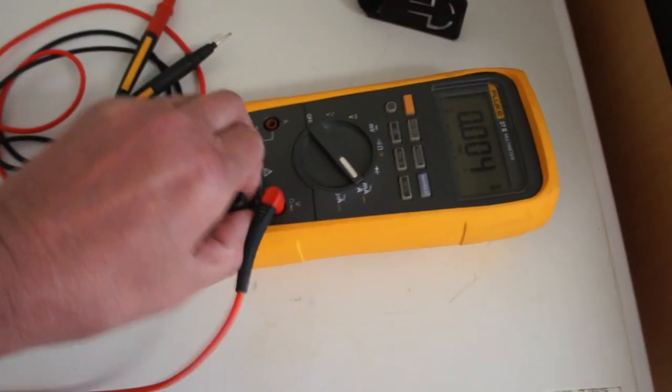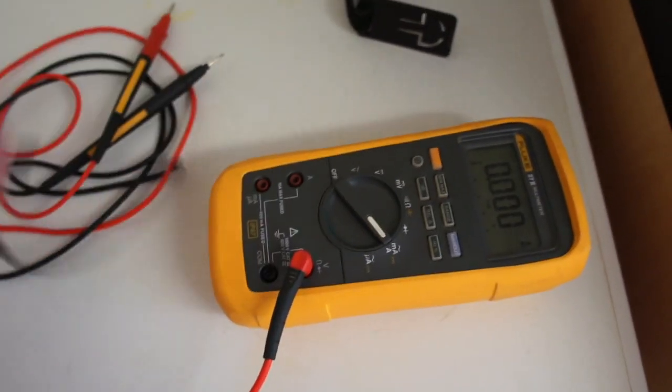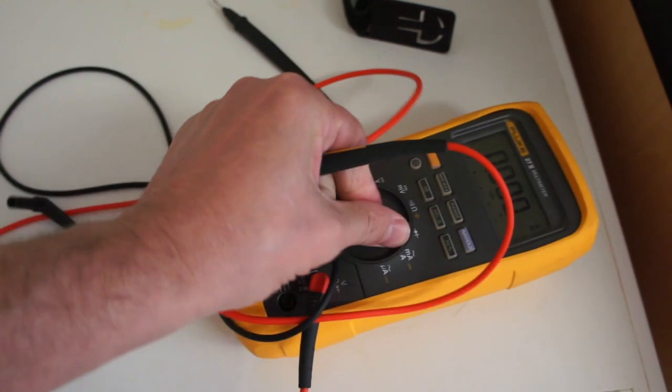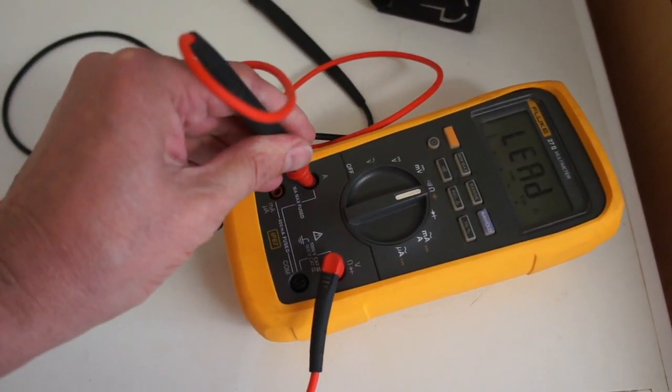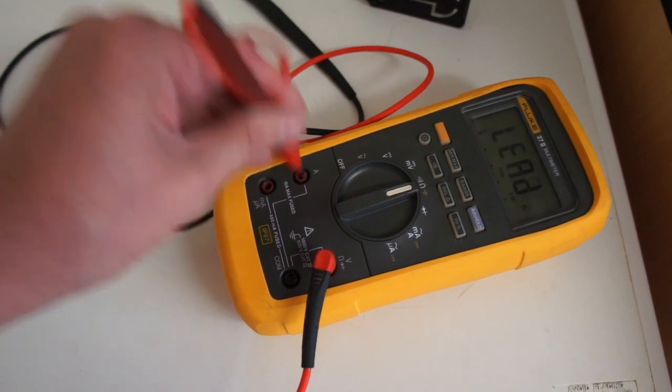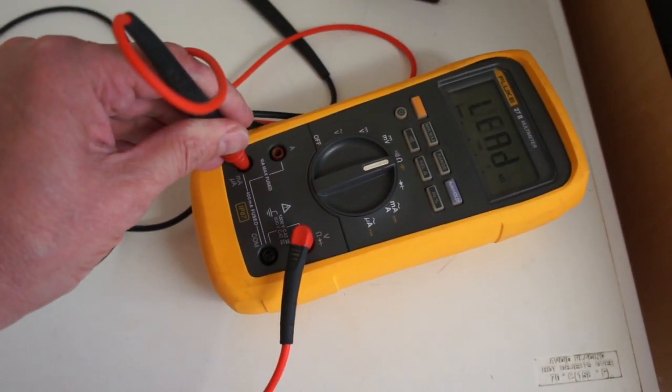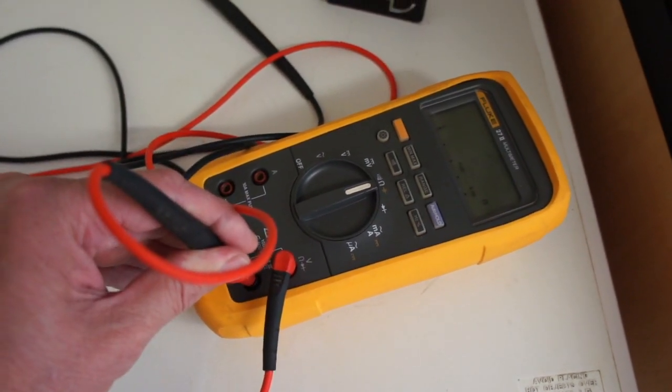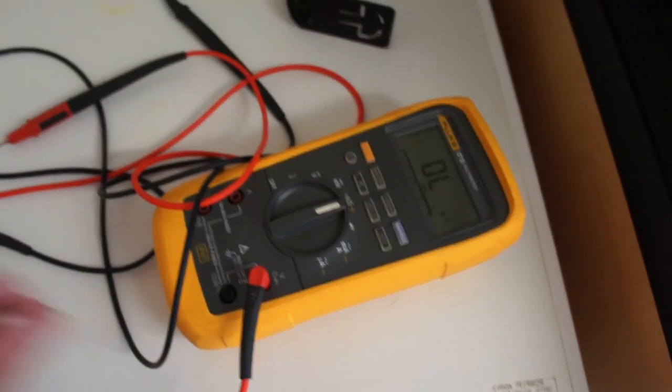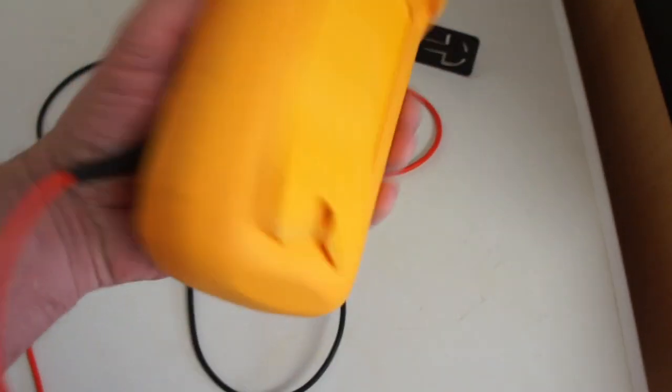Let's check to make sure all the fuses are okay. Zero ohms, that's good. Should be a bit higher. 1000 volts, that's good. So all the fuses are intact inside and it's pretty clean.